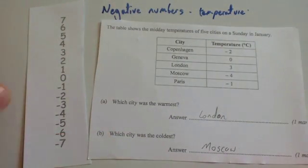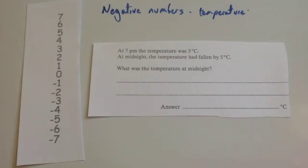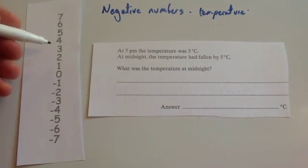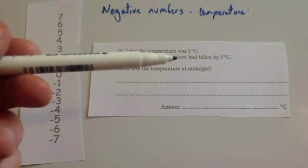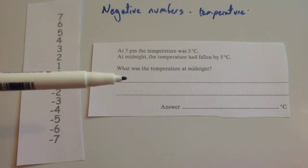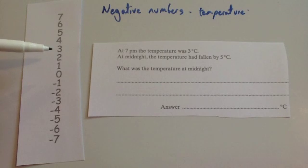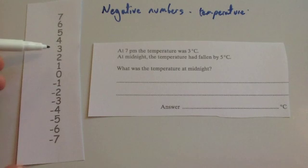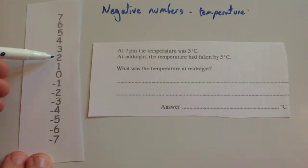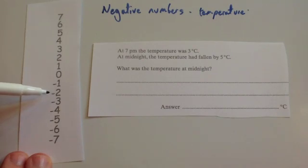Let's have a look at another question. At 7pm the temperature was three degrees Celsius. At midnight the temperature had fallen by five degrees Celsius. What was the temperature at midnight? So we're going to go down five from three, because the temperature is three degrees Celsius and it's going to fall by five. So one, two, three, four, five — the answer would be minus two.